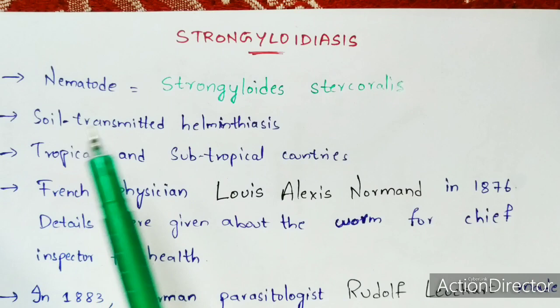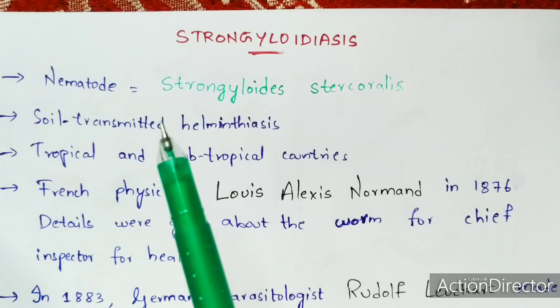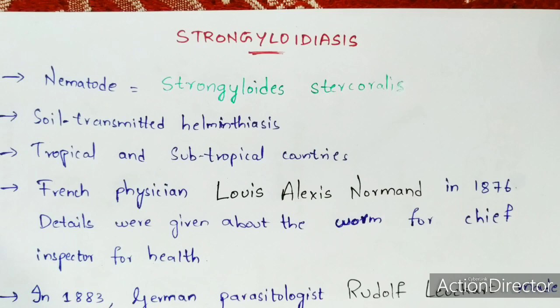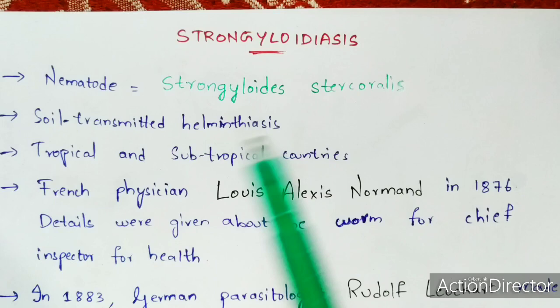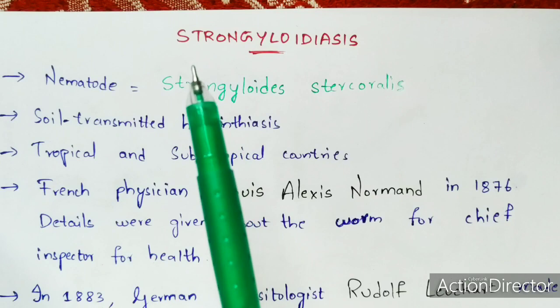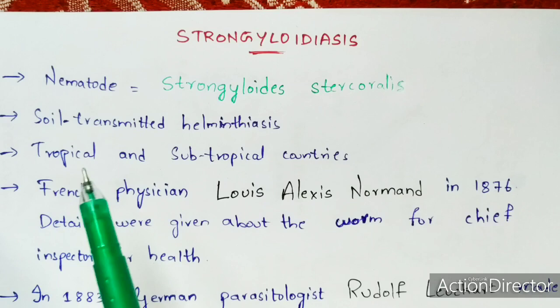These worms survive in the soil, and when they pass into human beings they survive in the small intestine and throughout the body, where they get proper nourishment. Not only humans but also other mammals can be affected. When a person has direct contact with soil, these worms get transported from the soil into the host. Strongyloidiasis is seen in tropical and subtropical regions.